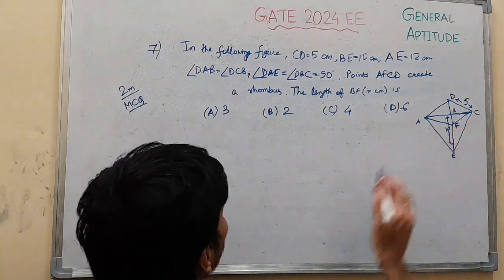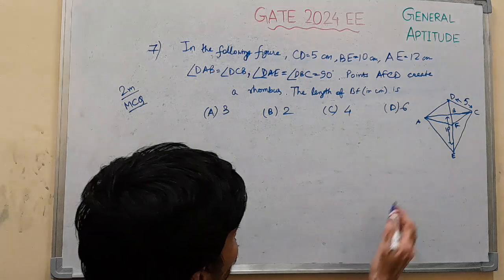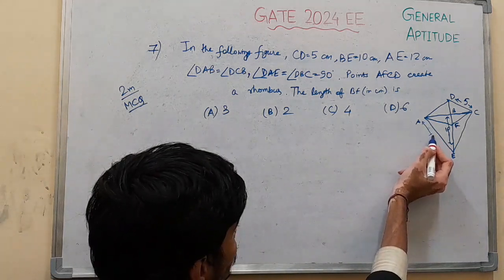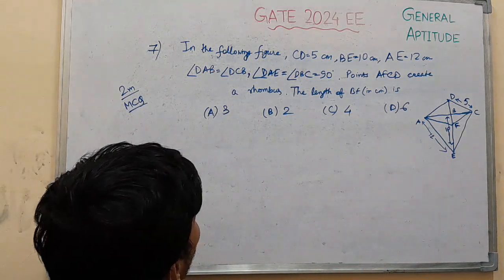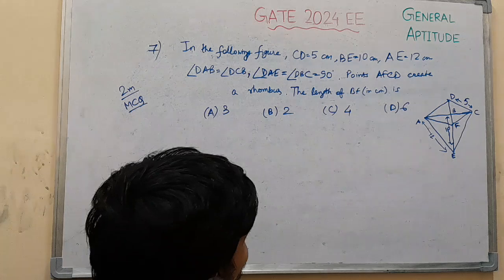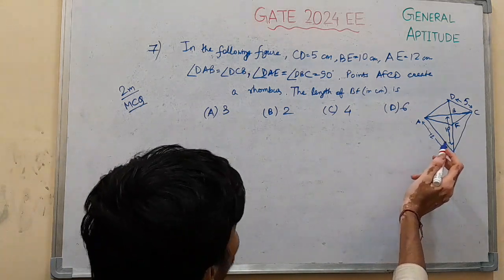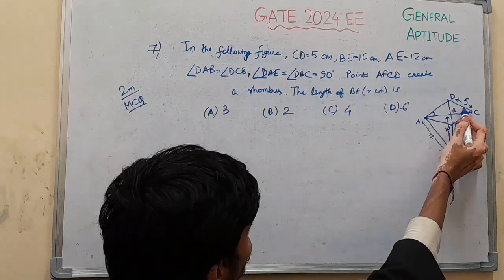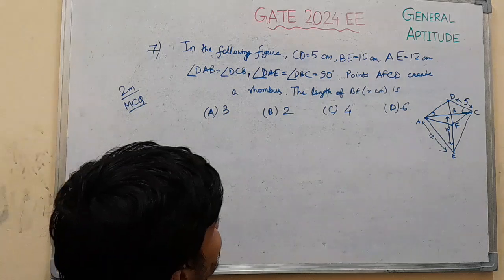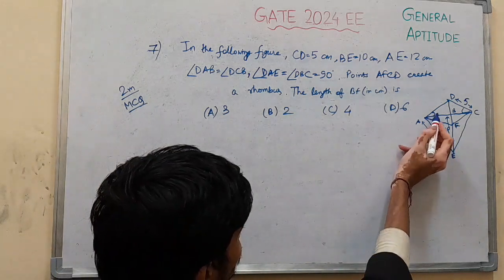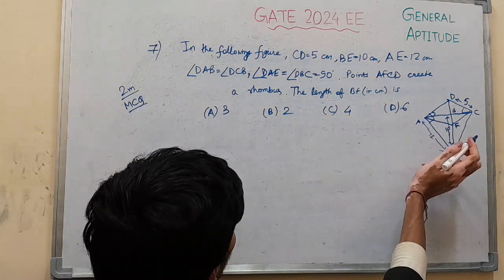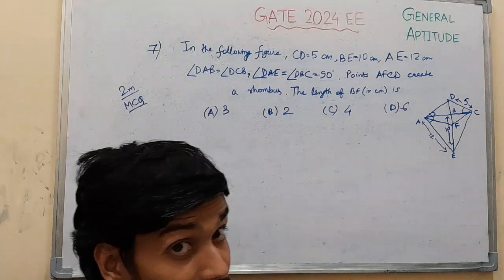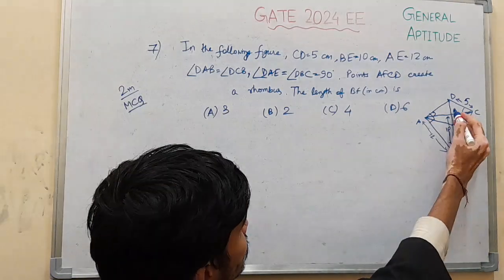This is 10, this is 5, and A is 12. So this is 12. And angle DAE and angle DBC are right angles.